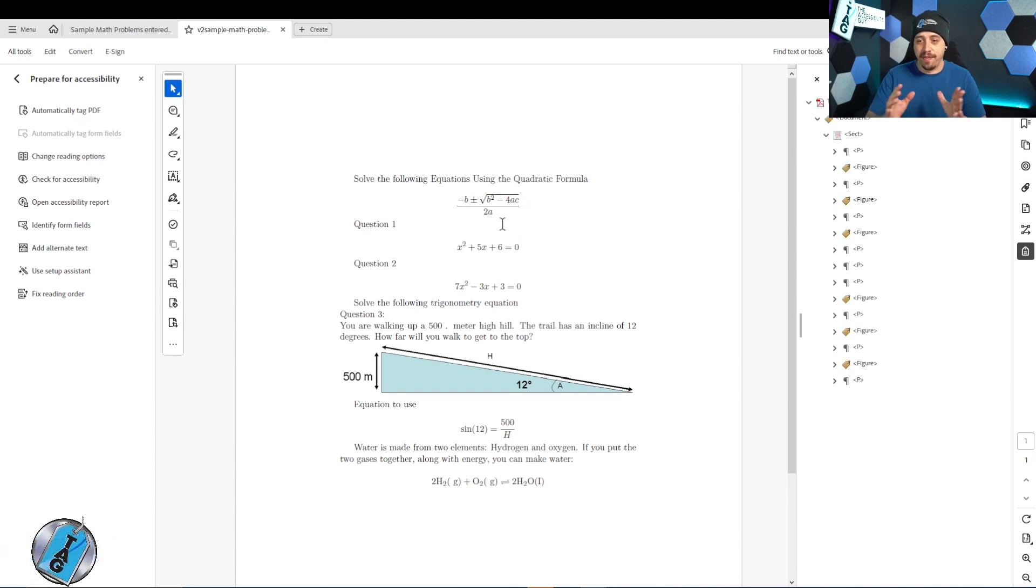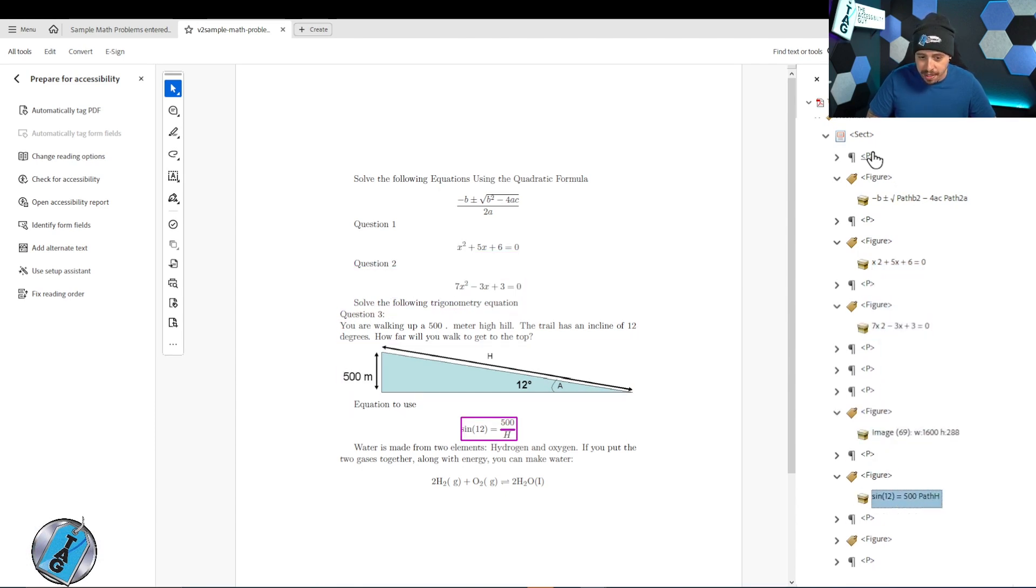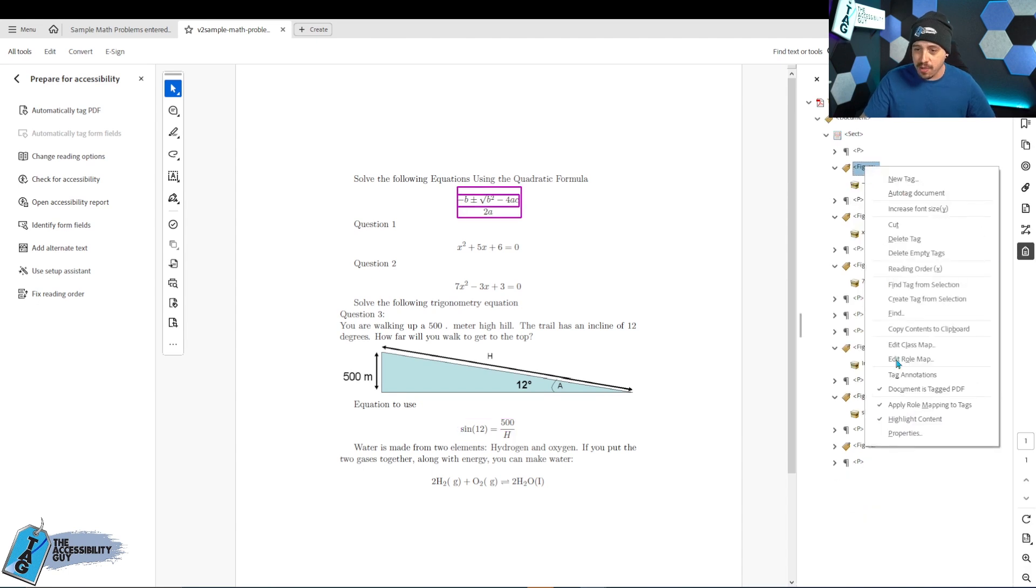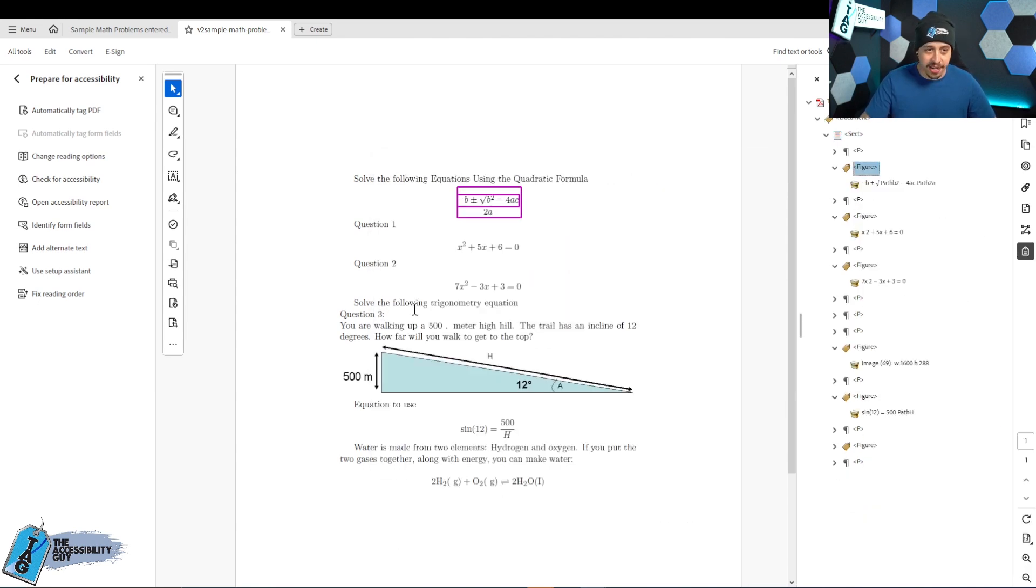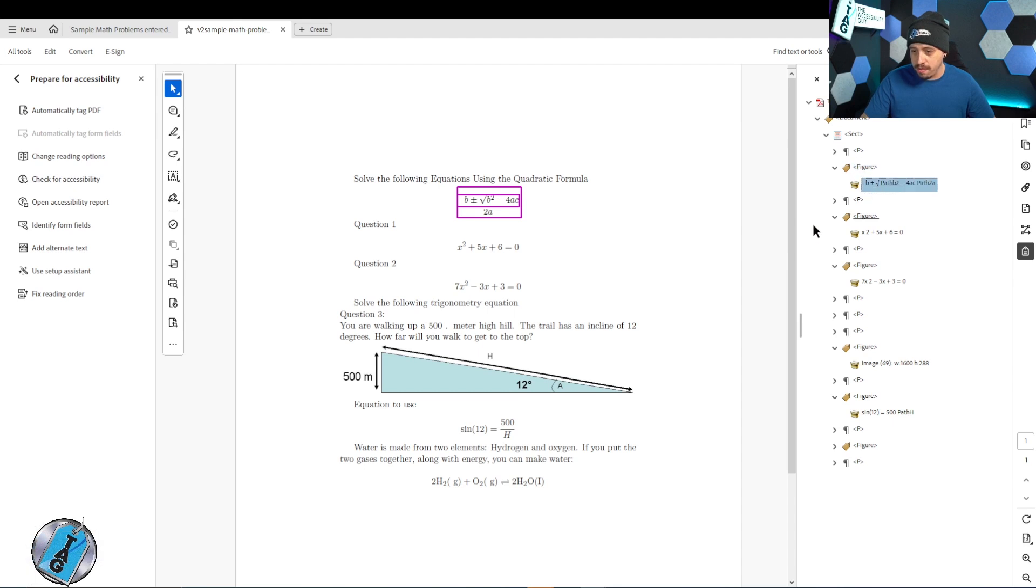So apparently this is a PDF with LaTeX in it. I'm very hesitant. It does have some paths in there, but interesting that some of the equations are actually coming through really well. Other than the path object, let's right click the figure tag, select properties, and there's no alt text in here. So, we're not out of the woods yet, but at least we got something there.